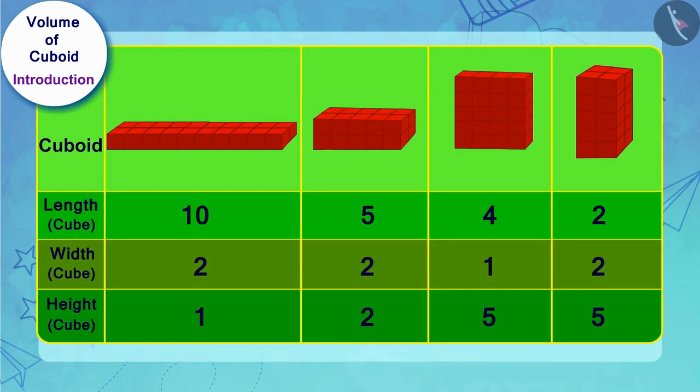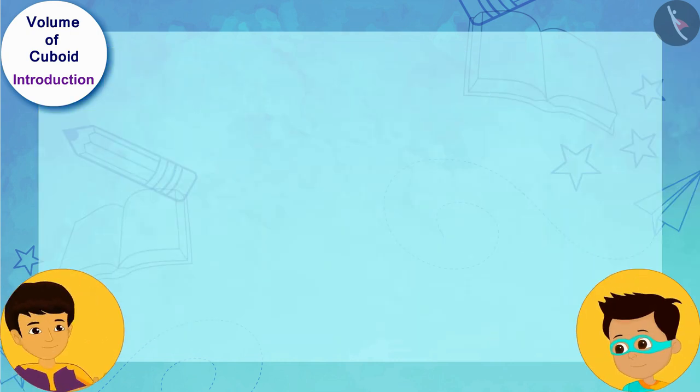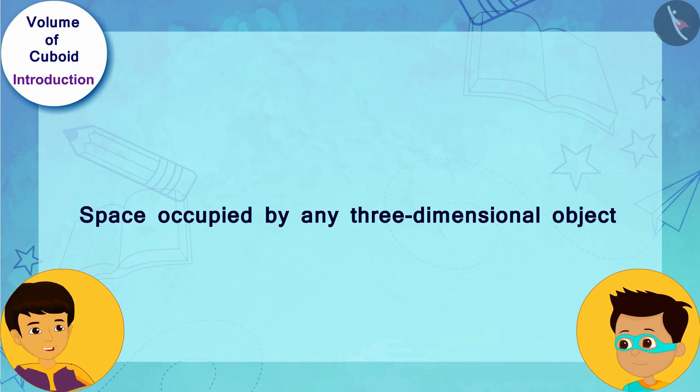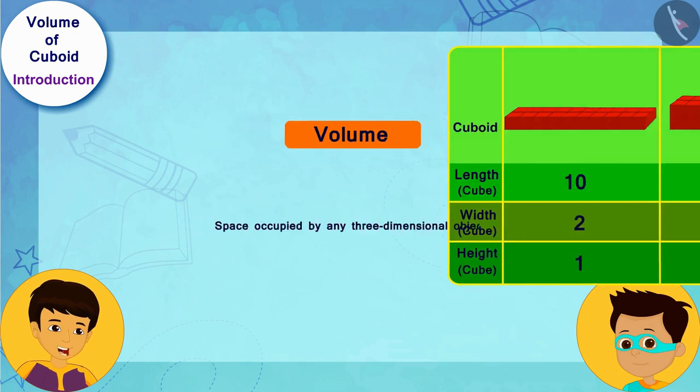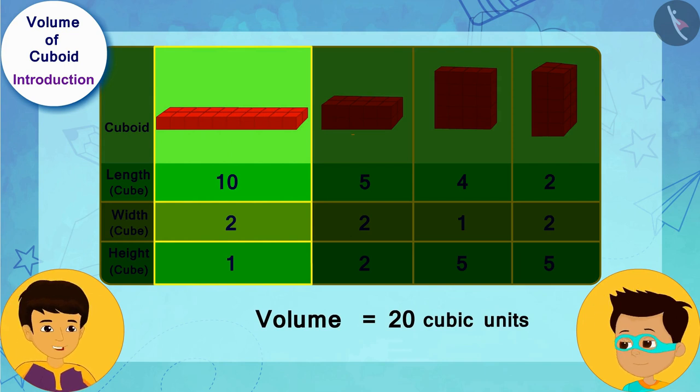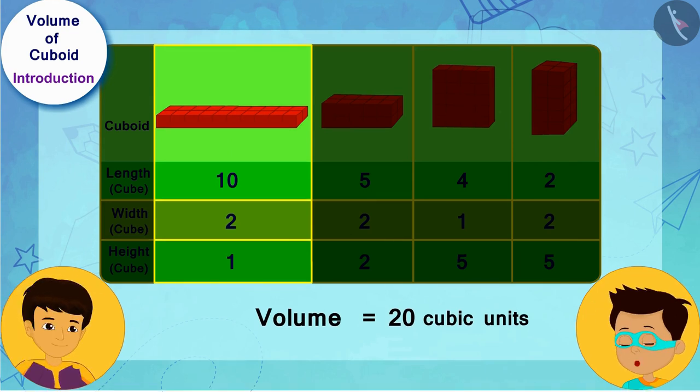Thomas, do you know that the space occupied by any three-dimensional object is called its volume? Therefore, the volume of your big cuboid box is equal to 20 cubic units. Hey, wow!